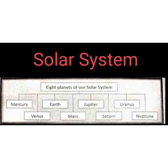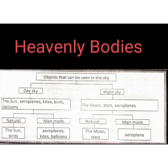Today I am going to explain the topic of heavenly bodies. The objects that can be seen in the sky are called heavenly bodies. These objects are different during the daytime and different during the nighttime.